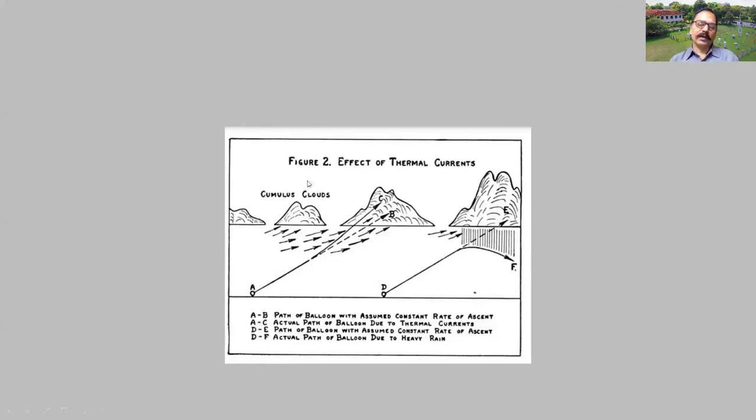Here I have given two pictures. The effect of thermal currents on balloons - I am trying to explain with this picture. This is A and this is B. A-B is the path of the balloon with assumed constant rate of ascent. A-C is the actual path of the balloon due to thermal currents. Because of temperature variations, the balloon will have a higher ascent. D-E is the path of the balloon with assumed constant rate of ascent. D-F is the actual path of the balloon due to heavy rain. When it comes here, you have rainfall here, and because of that the balloon is pushed down. So D-F is the actual path of the balloon due to rain.